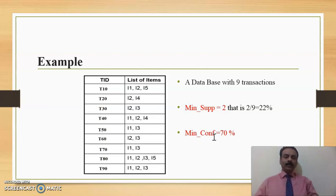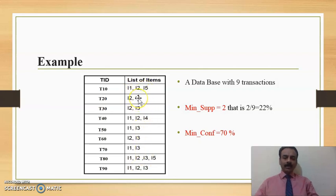Let us have a look and analyze this example. The items here are encoded — this is not the actual item name. They have been encoded as I1, I2, I3, I4, and I5. These are the unique items you are seeing here. Just have a clear look into this so that it will help you later during our discussion.